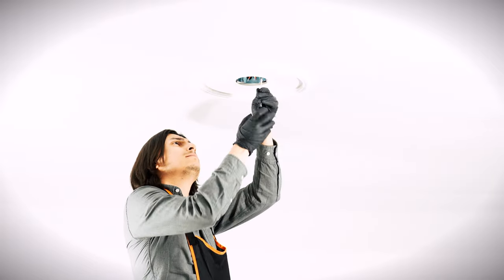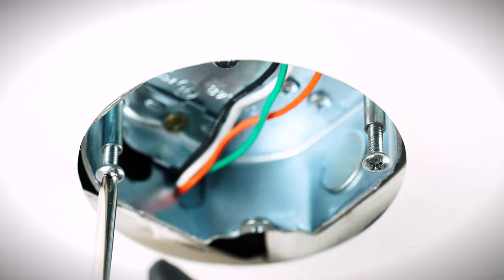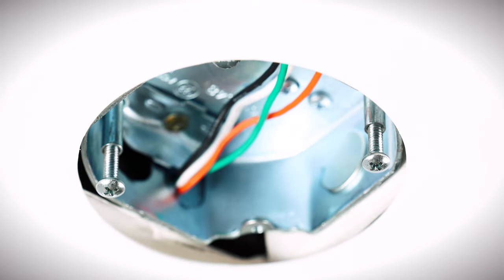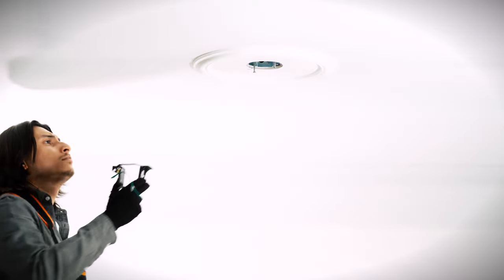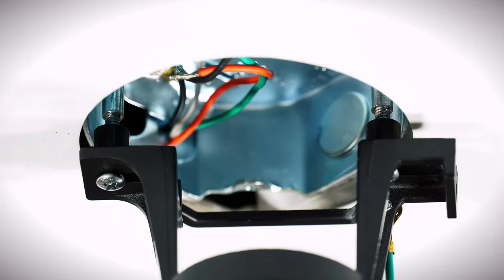At the ceiling box, loosen the two outlet box screws. Bring the mounting bracket up to the box and slide it over the screws. Tighten the screws securely.